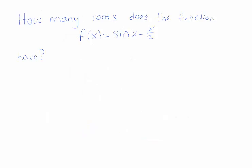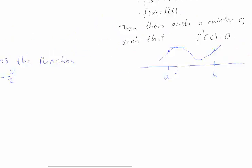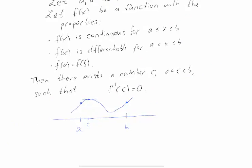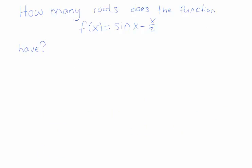One use of Rolle's Theorem is determining how many roots a function has. A root is when a function equals zero. If a function has a root at a and a root at b, then f(a) = 0 and f(b) = 0, so f(a) = f(b). That's exactly the condition in Rolle's Theorem.